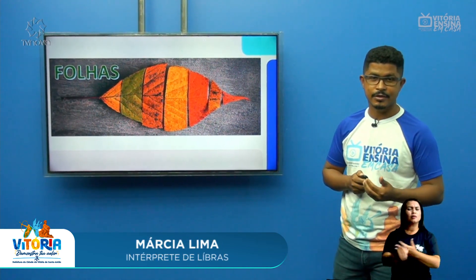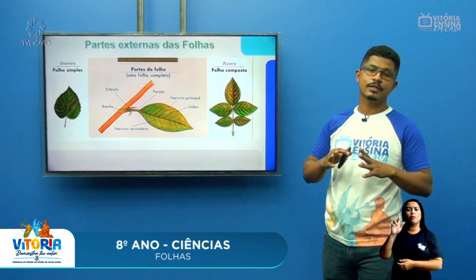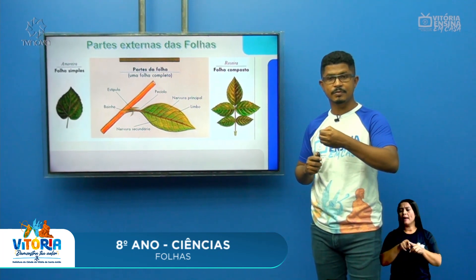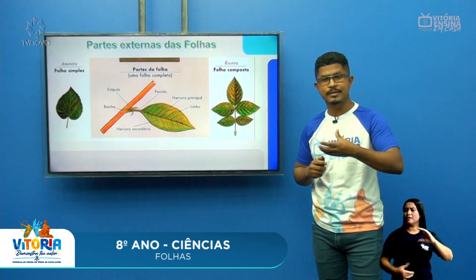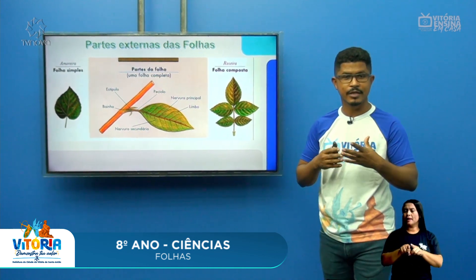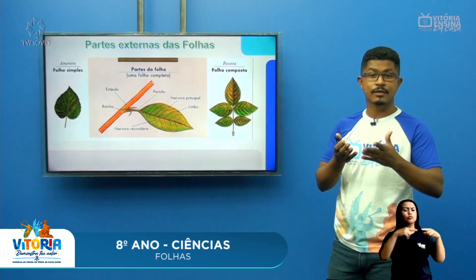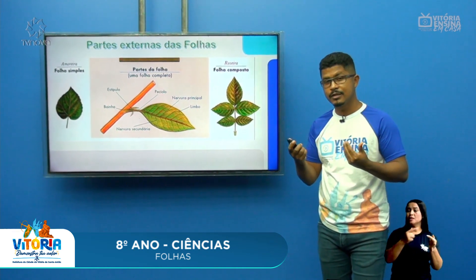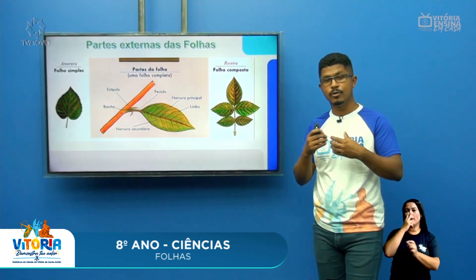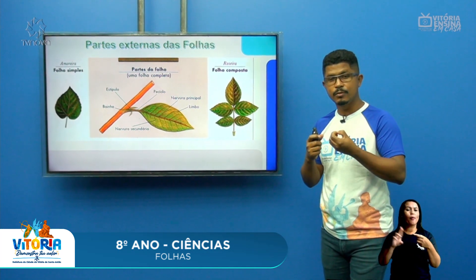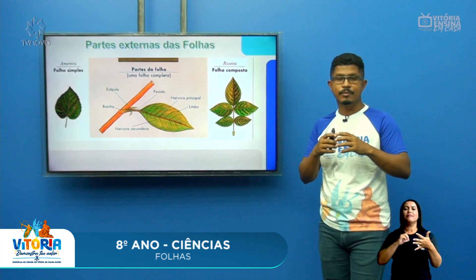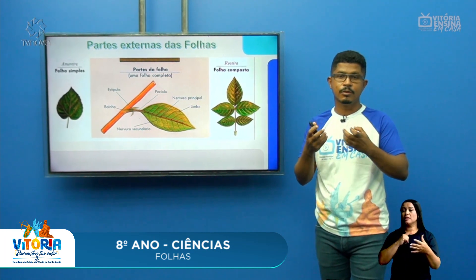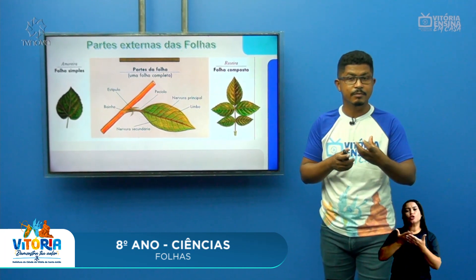Quando falamos de folhas, pensamos na grande variedade que elas possuem, mas elas também possuem características especiais, partes anatômicas de uma folha no geral. Muitas folhas são classificadas como simples e compostas, e possuem várias partes, como o pecíolo, o limbo, a bainha — partes que os botânicos utilizam para identificar uma espécie de planta.